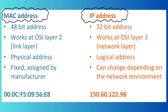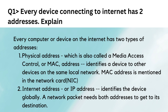Now let's look at some sample exam questions. Question one: every device connecting to the internet has two addresses — explain. Every computer or device on the internet has two types of addresses. Number one is the physical address, also called the MAC address or media access control address — this is used to identify a device to other devices on the same local network. The second address is the internet address or IP address, which helps to identify the device globally. A network packet needs both addresses to get to its destination.